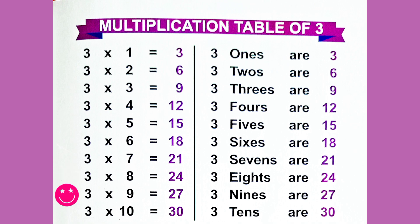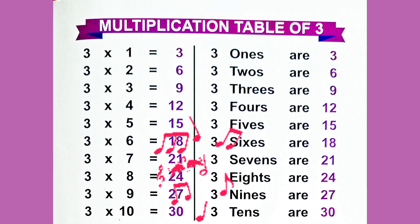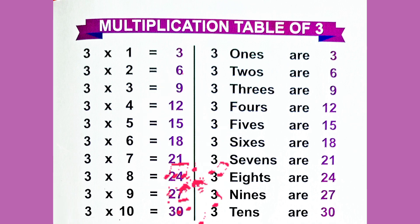3 into 9 is equal to 27. 3 into 10 is equal to 30. Now sing with me!